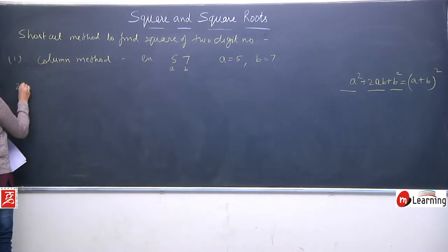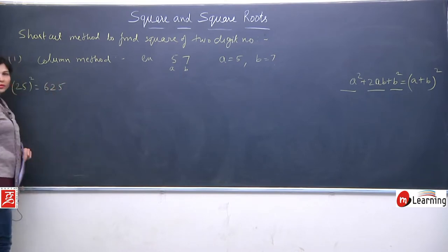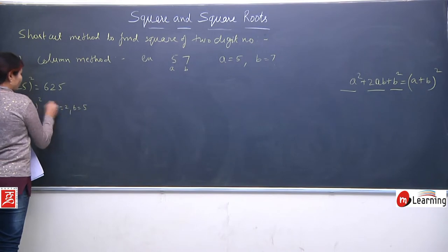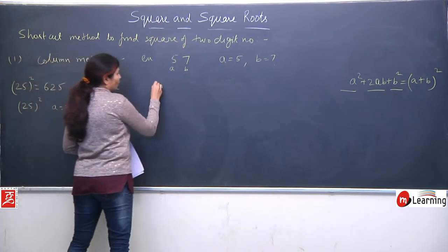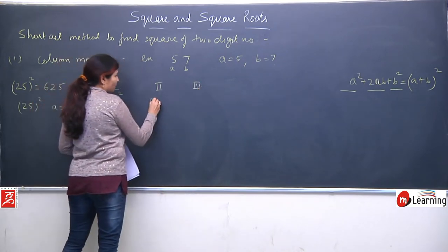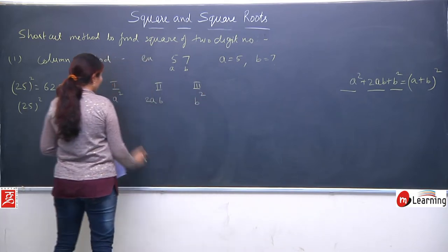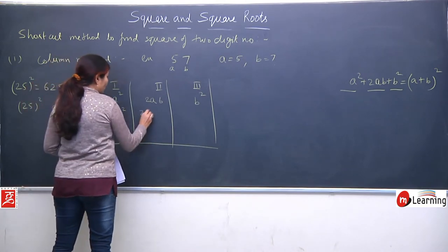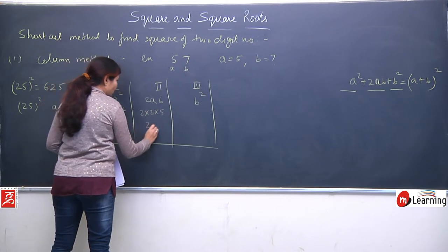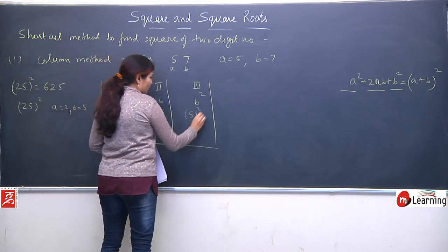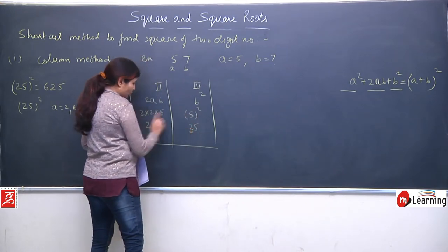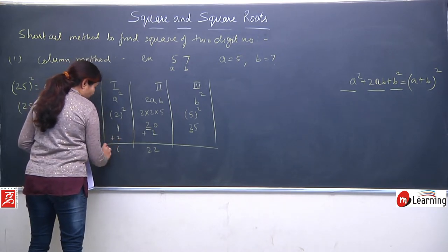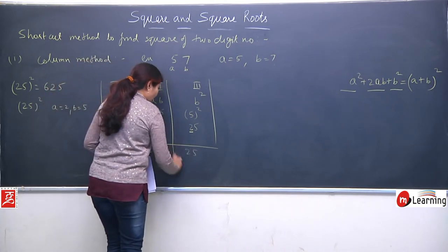Let's quickly revise the column method with small questions. First example: 25². You already know 25² = 625, so it's easy to verify. For 25, a = 2 and b = 5. We make 3 columns: a², 2ab, b². a² = 4, 2ab = 2×2×5 = 20, b² = 25. Now, adding the carry from b² (the tens digit, 2) to the 2ab column: 20 + 2 = 22.